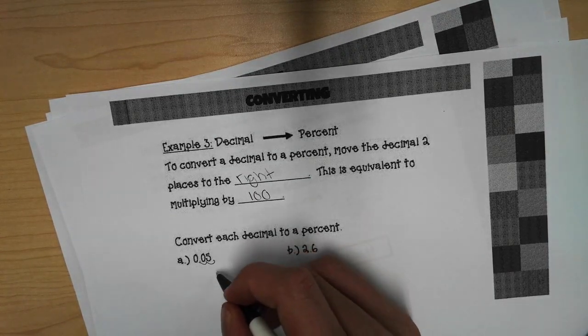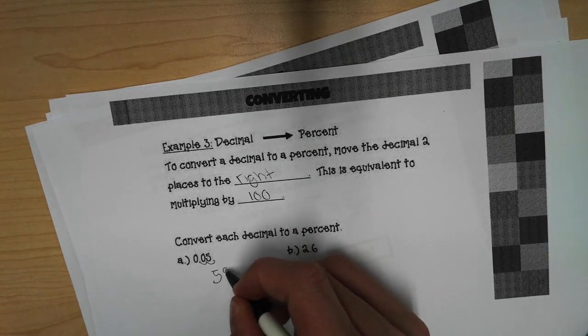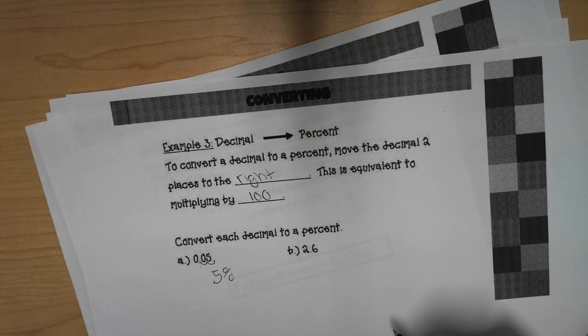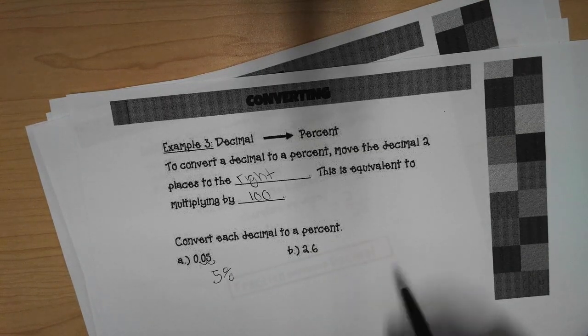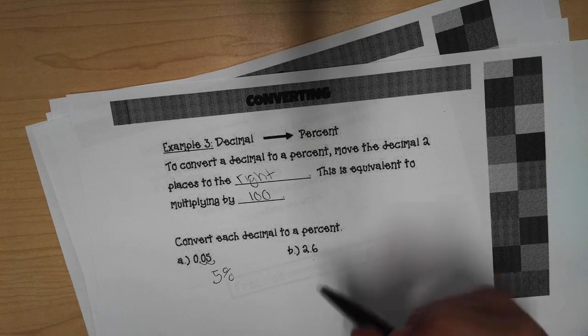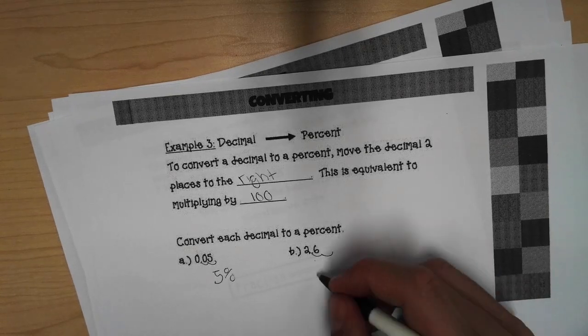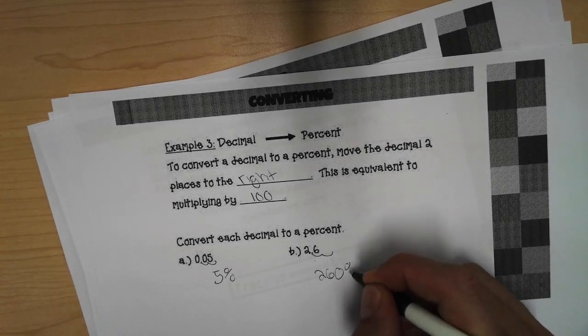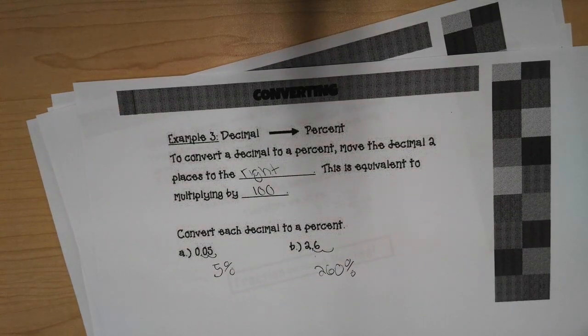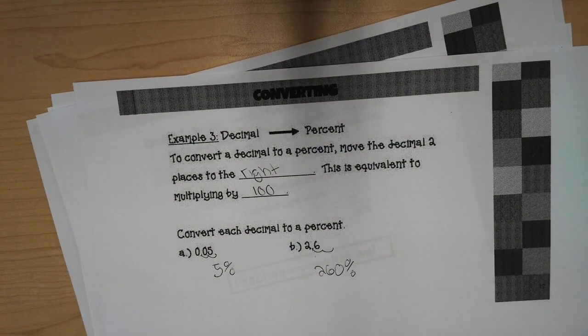So I move this two places to the right. You get five percent. Applying that same logic here, I move this two places to the right. And I get 260 percent. Let's keep going.